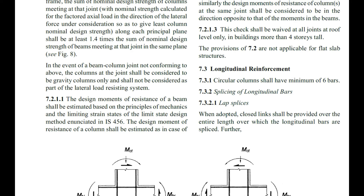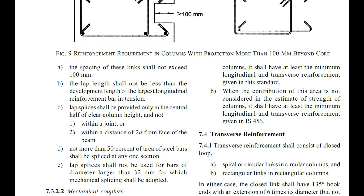For longitudinal reinforcement, IS 13920-2016, clause 7.3, gives the requirements. For circular columns, a minimum of six bars must be used. For splicing of longitudinal bars, closed links shall be provided over the entire spliced length. The spacing of links shall not exceed 100 mm. The lap length shall not be less than the development length of the largest longitudinal bar in tension. Lap splices shall not be used for bars larger than 32 mm — mechanical couplers must be used instead.